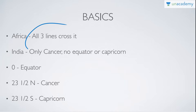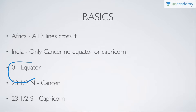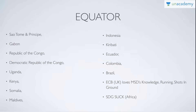To cover the basics: in Africa, all three lines cross — Tropic of Cancer, Tropic of Capricorn, and Equator. In India, only the Tropic of Cancer passes — no Equator or Capricorn. Remember: 0° is the Equator, 23.5° North is the Tropic of Cancer, and 23.5° South is the Tropic of Capricorn.